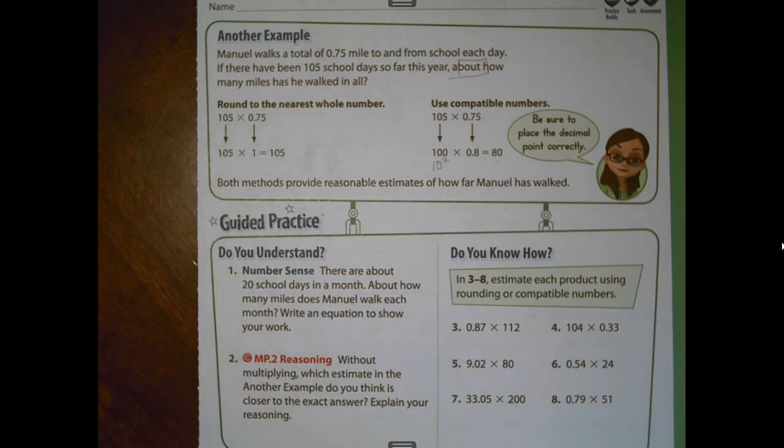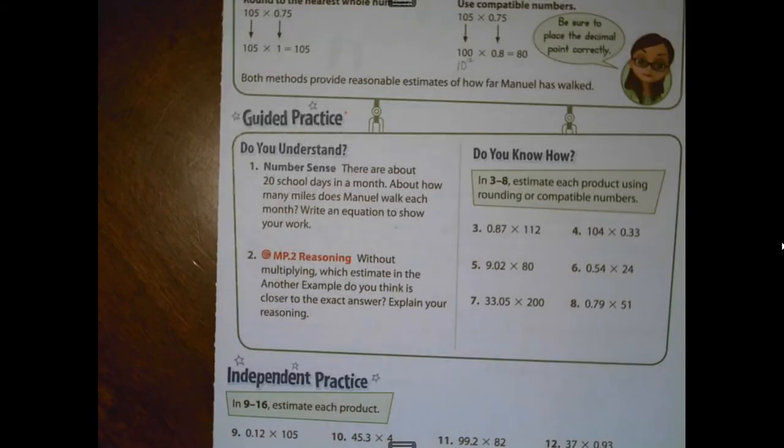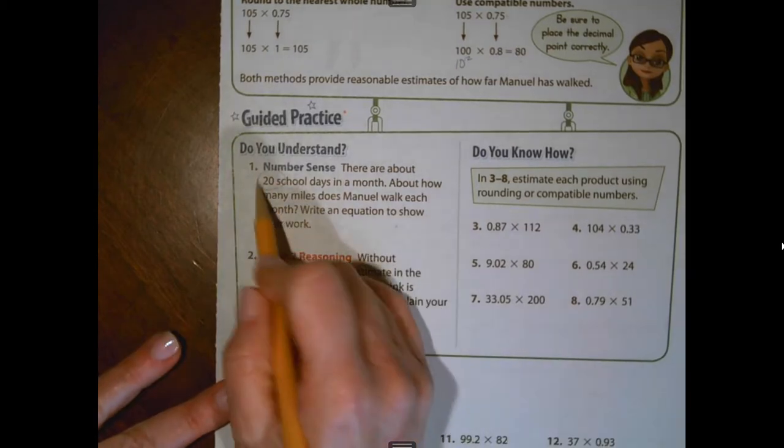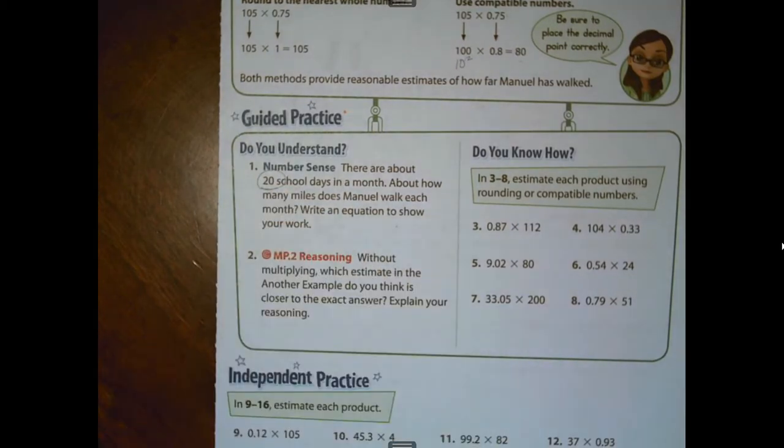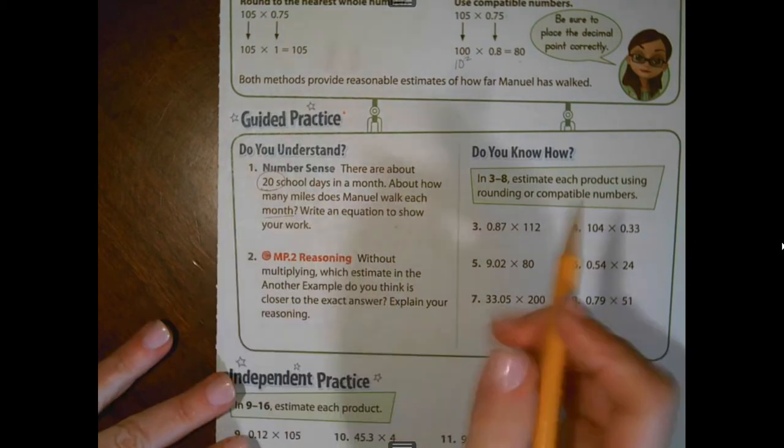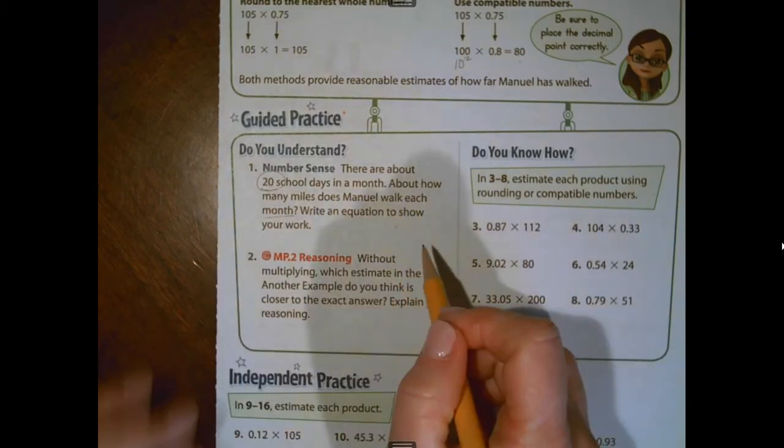Both methods provide reasonable estimates of how far Manuel has walked. However, the one that has the factors closest to the original will be the closest. So let's take a look at some of the practice problems under the guided practice. Let's look at number one. There are about 20 school days in a month. About how many miles does Manuel walk each month? Write an equation to show your work.